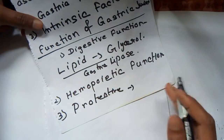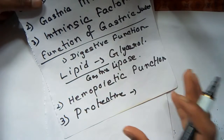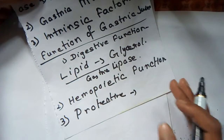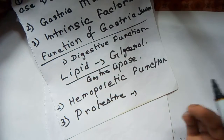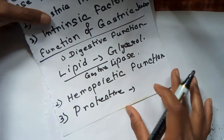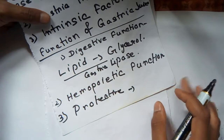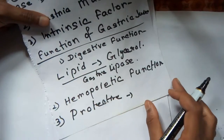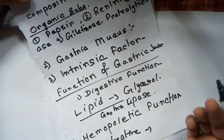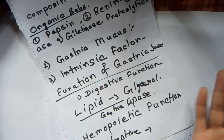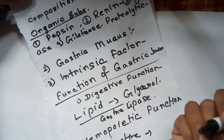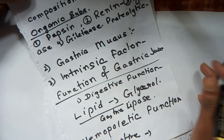Number three is the protective function. The mucus present in gastric juice is responsible for the protection of the wall of the stomach.